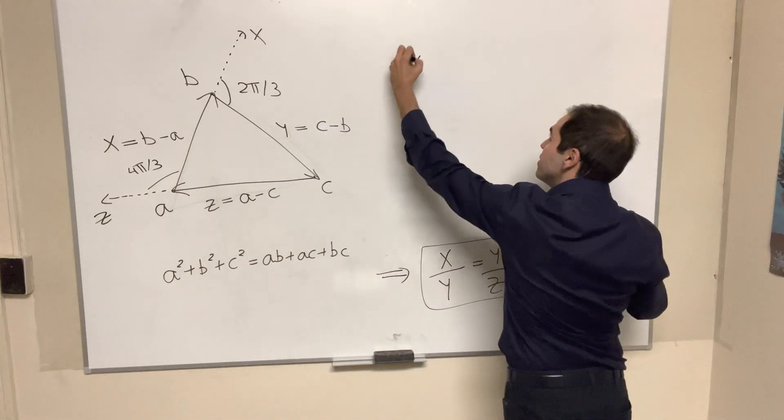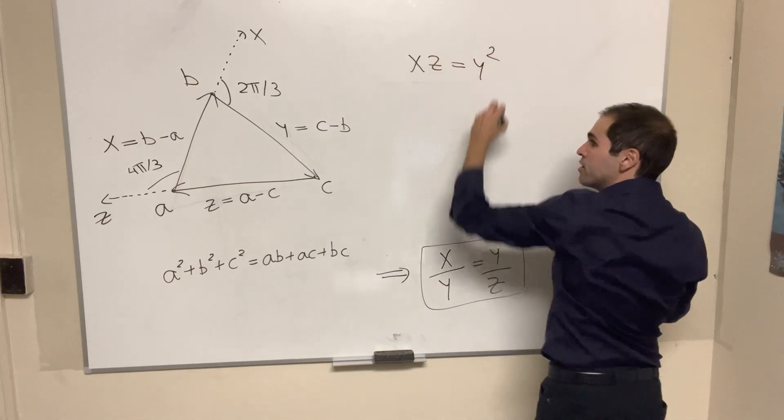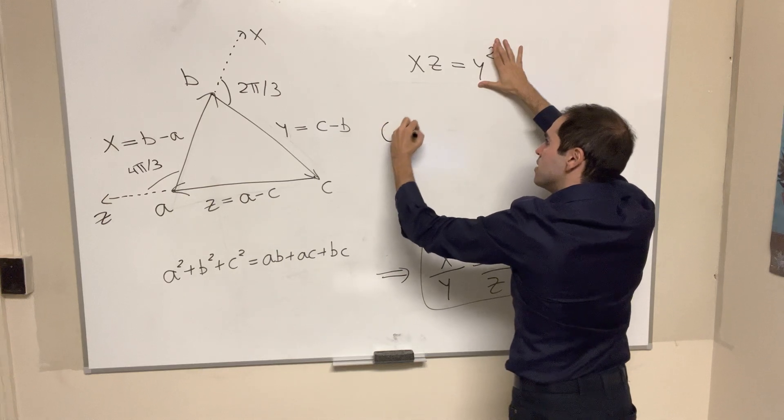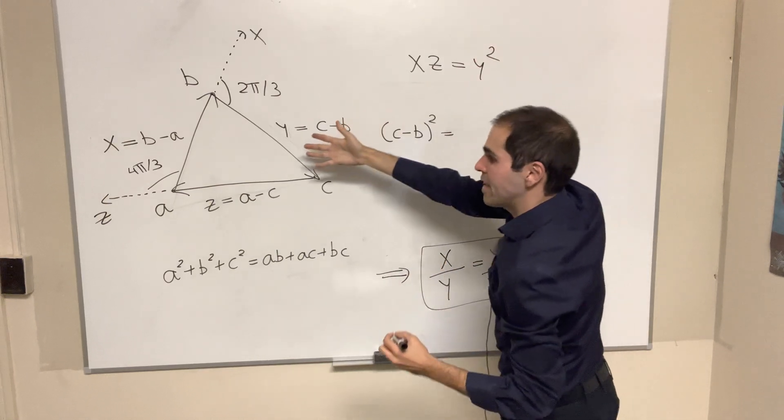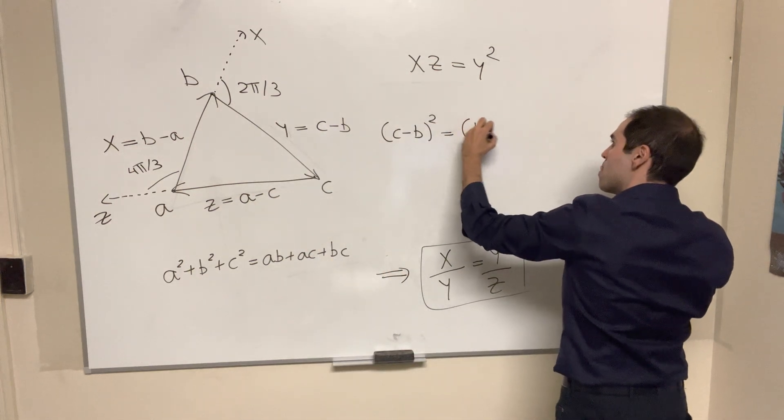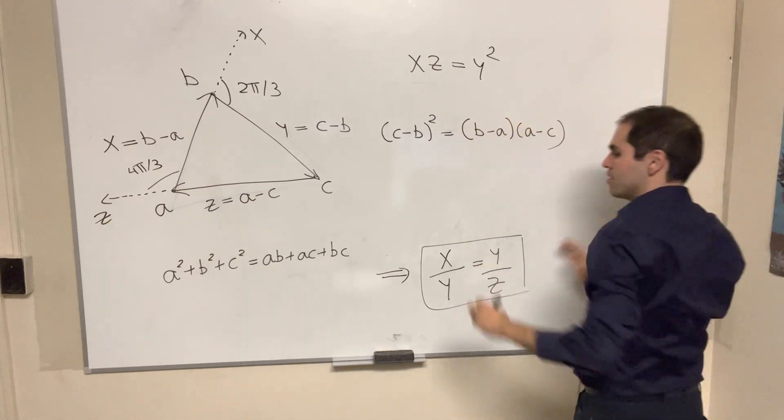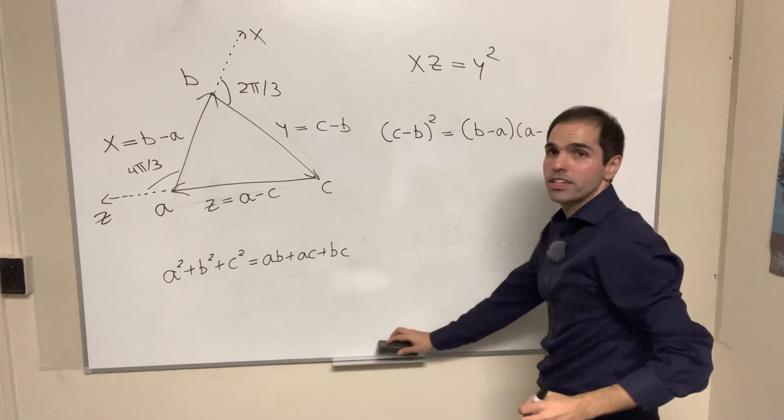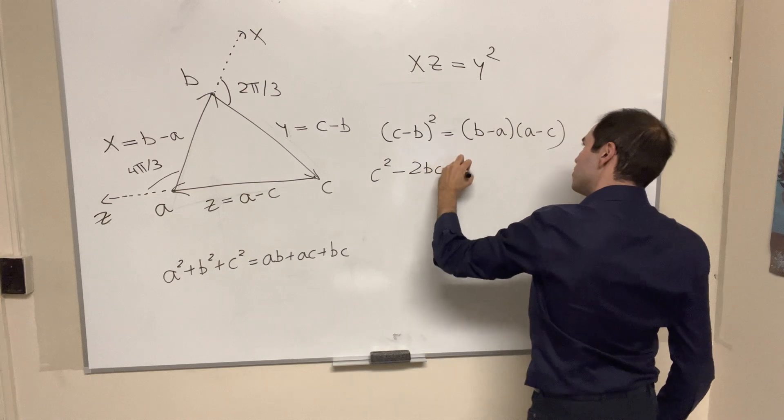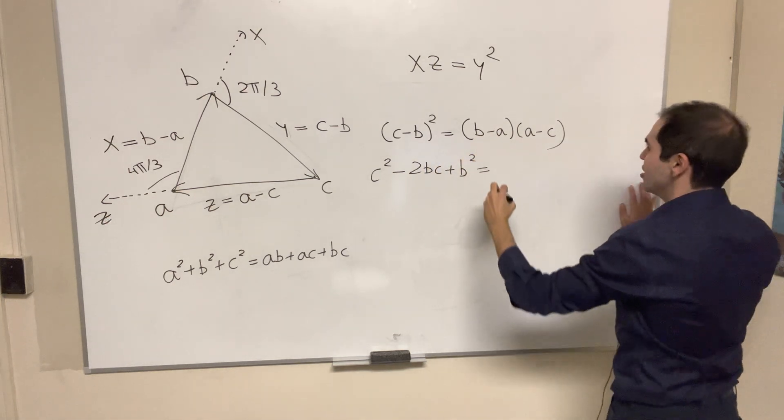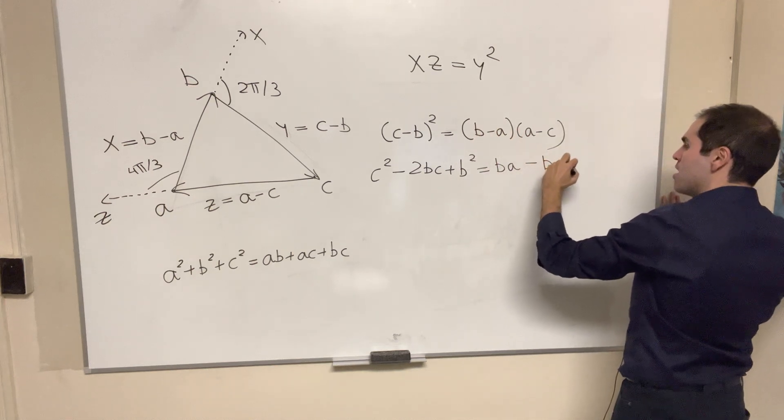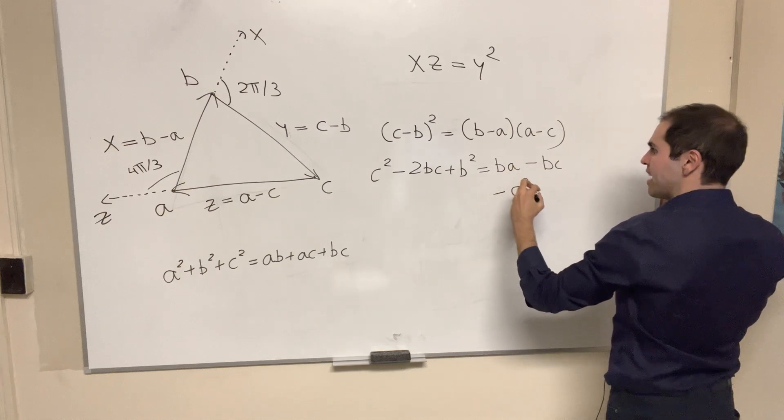Now, what is y? That is c minus b. So (c minus b) squared equals x times z, so (b minus a) times (a minus c). All right, very good. And now just expand this out. So c squared minus 2bc plus b squared equals ba minus bc minus a squared plus ac.